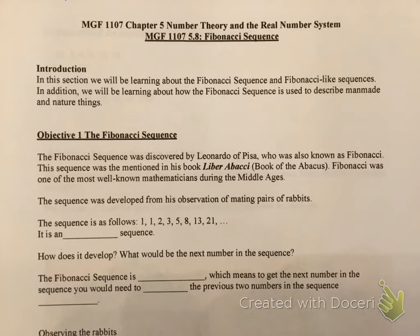In objective number one, the Fibonacci sequence was discovered by Leonardo of Pisa, who was also known as Fibonacci. By the way, Leonardo da Pisa — that is just telling you the name Leonardo comes from Pisa, which is a town in Italy, as is Leonardo da Vinci. Vinci is also a town in Italy. It's kind of like saying my name is Joanne from St. Pete. Anyways, I just wanted to let you know as a side note. He was also known as Fibonacci, hence where the Fibonacci sequence name comes from.